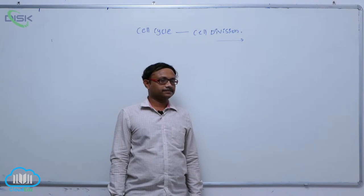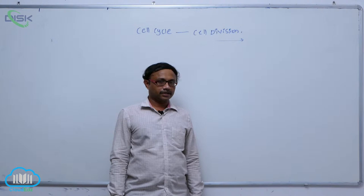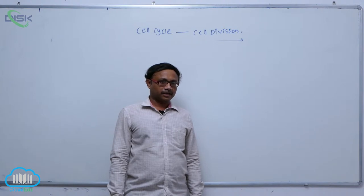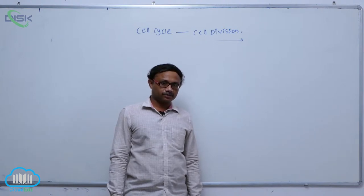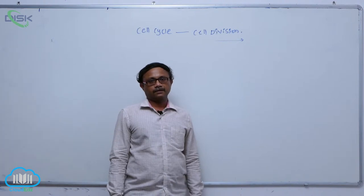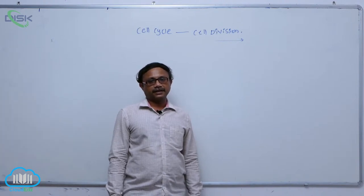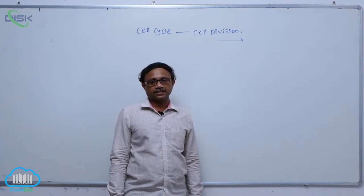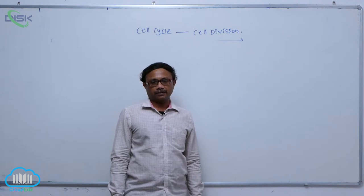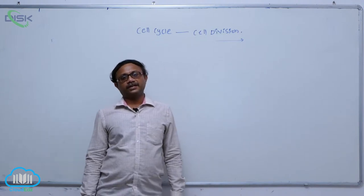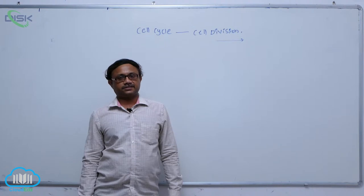DNA undergoes replication, producing daughter DNA molecules. In this process, the chromosome number is not changed, but the DNA amount per cell is doubled. This is known as the synthesis phase.